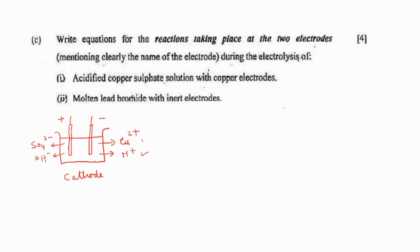Out of H⁺ and Cu²⁺, only one will be getting a chance to get discharged — it depends upon the position of the ions in the electrochemical series. As per the position, Cu²⁺ ion will be getting a chance. So Cu²⁺ ion will be moving towards the cathode, it will be accepting two electrons, and it will be getting deposited as copper metal. This is the cathode reaction.